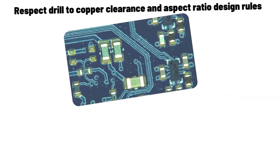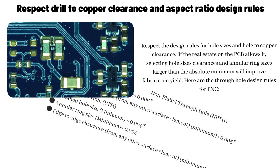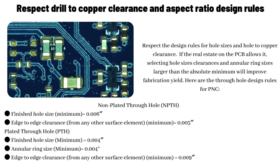Respect drill-to-copper clearance and aspect ratio design rules. Respect the design rules for hole sizes and hole-to-copper clearance. If the real estate on the PCB allows it, selecting hole sizes, clearances, and annular ring sizes larger than the absolute minimum will improve fabrication yield. Here are the through-hole design rules for PNC: non-plated through-hole (NPTH) finished hole size minimum equals 0.006; edge-to-edge clearance from any other surface element minimum equals 0.005. Plated through-hole (PTH) finished hole size minimum equals 0.004.